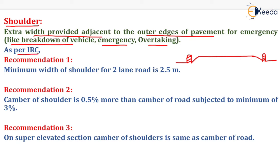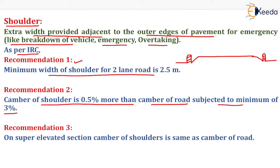As per IRC, the minimum width of shoulder for a 2-lane road is 2.5 meter. The camber of shoulder is 0.5 percent more than the camber of road, subject to a minimum of 3 percent — meaning the minimum camber of shoulder is 3 percent. On a super-elevated section, the camber of shoulder is the same as the camber of road.